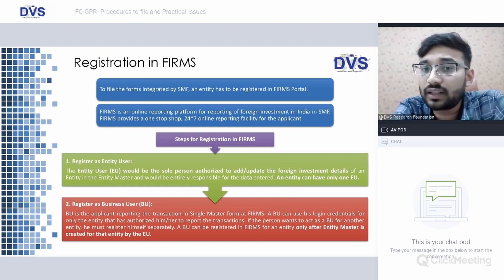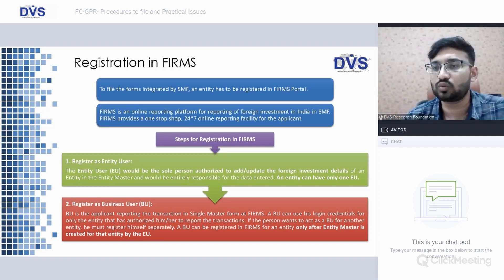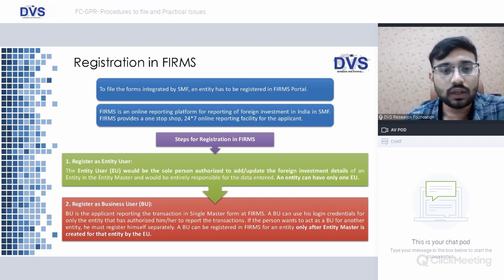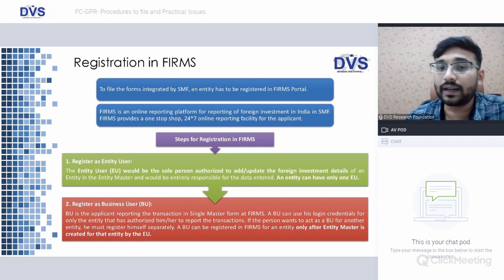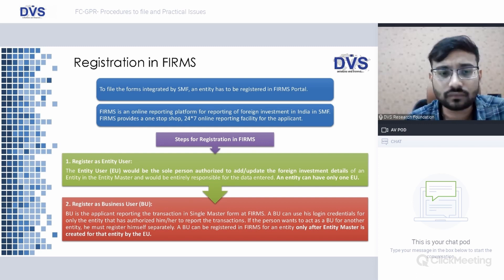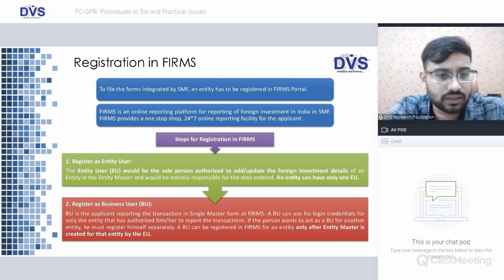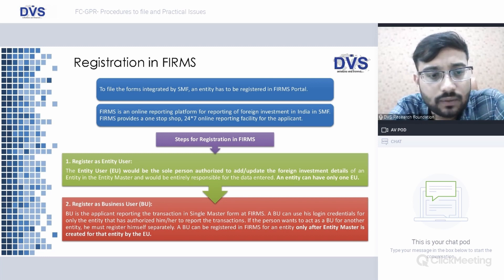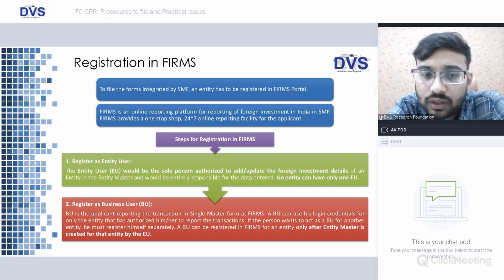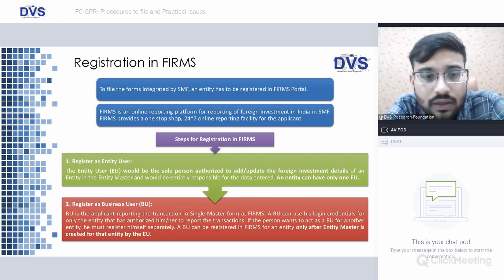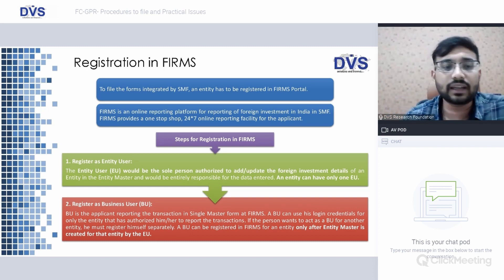To file the forms integrated by SMF, an entity has to be registered in the FIRMS portal. The first registration is as an Entity User. An entity can have only one EU. The Entity User is the sole person authorized to add and update the foreign investment details of an entity in the Entity Master, and is entirely responsible for the data. Think of this as a director of the company — a single person who can represent the company for filing these forms.